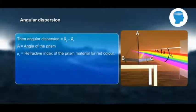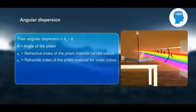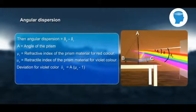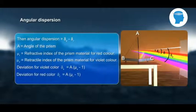Angular dispersion = δ_V - δ_R, where A stands for angle of the prism, μ_R stands for refractive index of the prism material for red colour, μ_V stands for refractive index of the prism material for violet colour. Deviation for violet colour δ_V = A(μ_V - 1). Deviation for red colour δ_R = A(μ_R - 1).